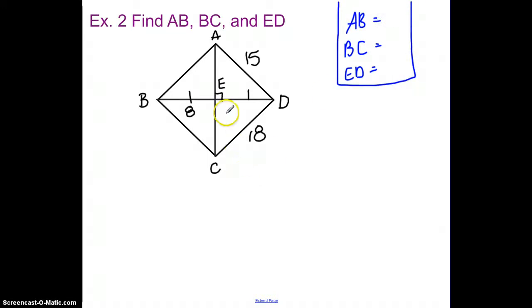So probably the easiest piece to find is the idea that if this BE is marked with one hash mark of 8, this little hash mark of 8 that's ED is also going to have to be 8. So that means ED is going to be 8.